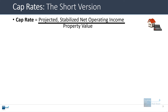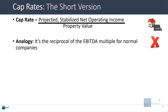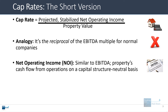The cap rate in real estate equals the projected stabilized net operating income of a commercial property divided by that property's value. It's the reciprocal of the EBITDA multiple for normal companies, which we've covered on this channel before. Net operating income itself is similar to EBITDA because it represents a property's cash flow from operations on a capital structure neutral basis, before capital expenditures or the equivalent of capital expenditures for properties.